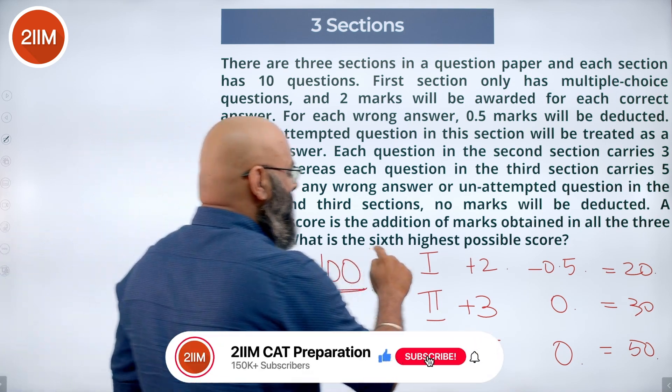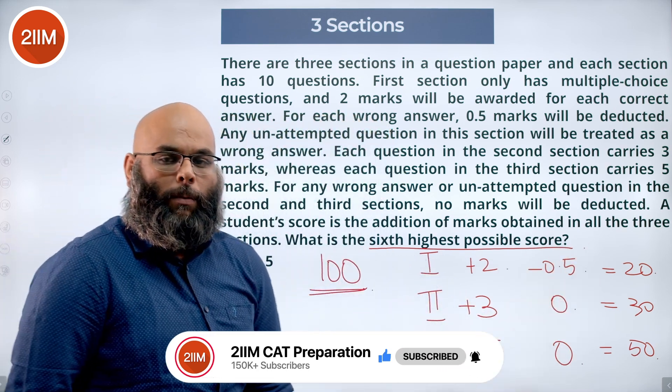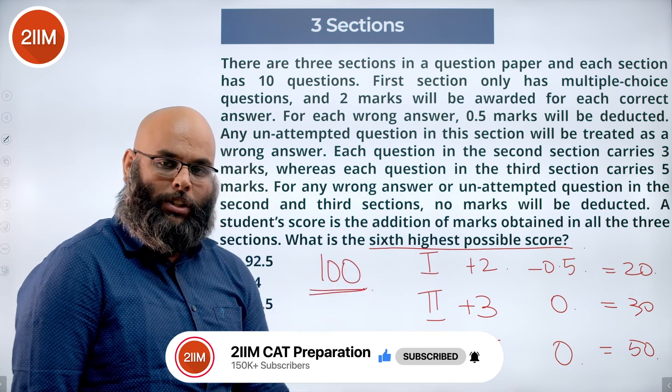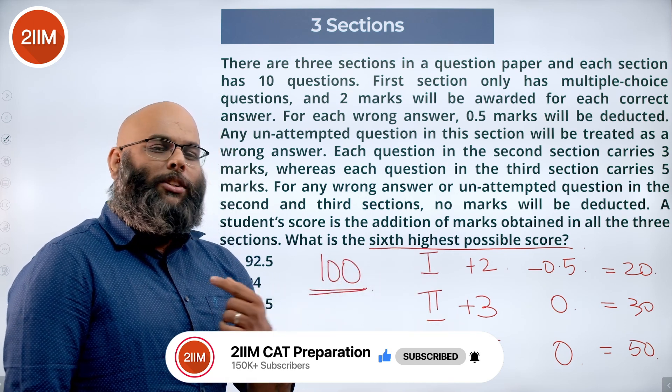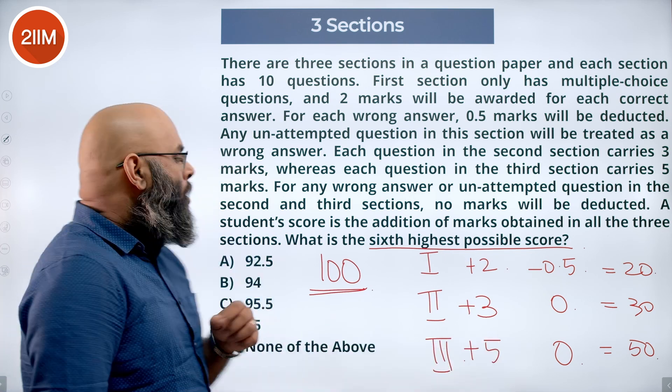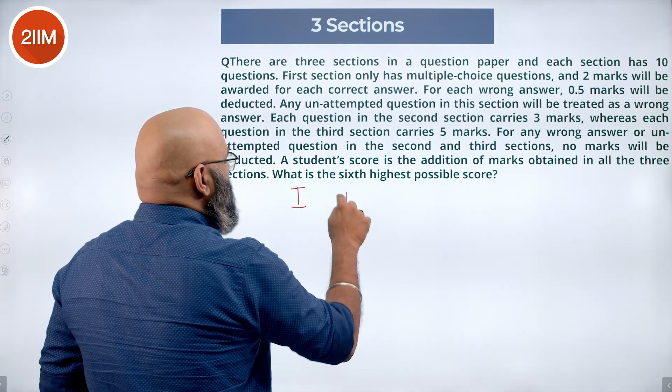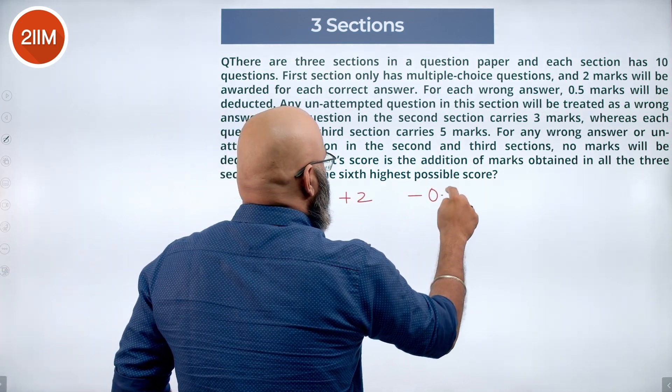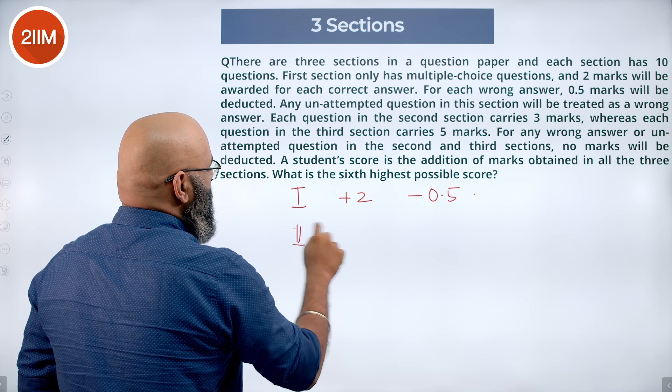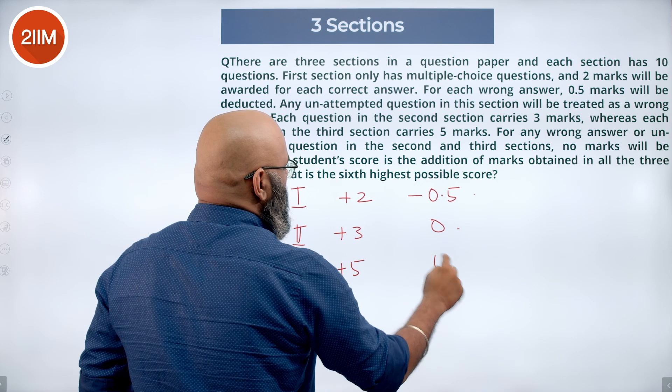Now the question is sixth highest possible score. When am I going to look for the other marks when something goes wrong in any of the sections? Now the second highest score should be missing out on the least possible marks. If I say in section 1, it is plus 2 and minus 0.5, second section it is plus 3 and 0, and third section it is going to be plus 5 and 0.